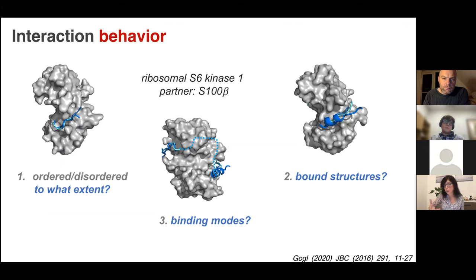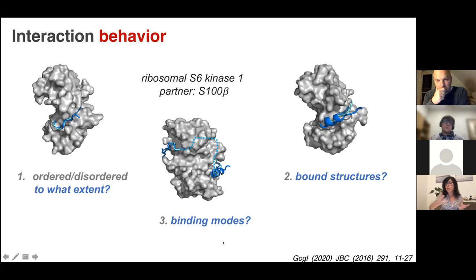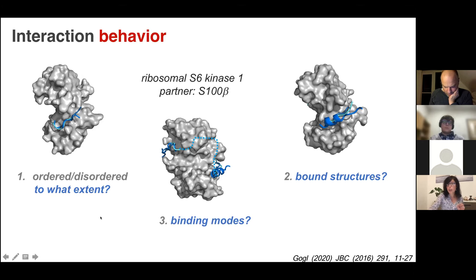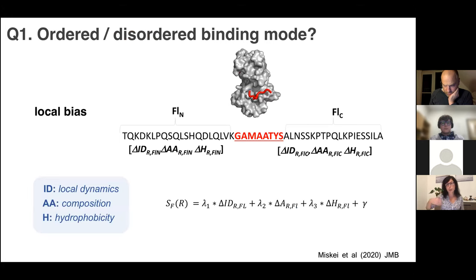The second component is, if it has a bound structure, what kind of bound structures exist—perhaps the same helix with different orientations, which might be very important for droplet formation. The third question is the binding modes: how many different context-dependent behaviors can a protein complex exhibit? We have to ask questions properly—that's the only way to get proper answers. For a long time we had not asked about the interaction behavior, which is why we were surprised that some proteins behave differently under different contexts.